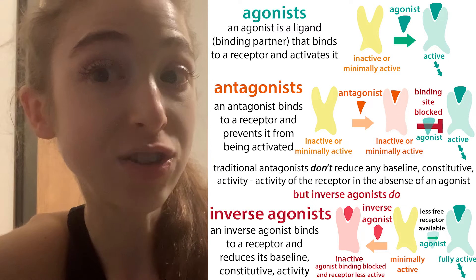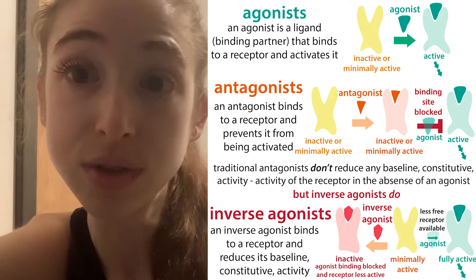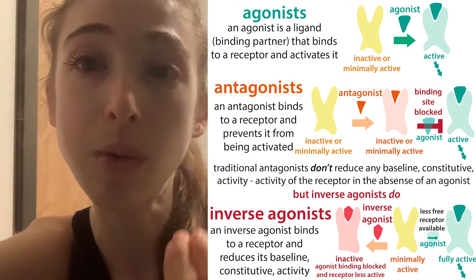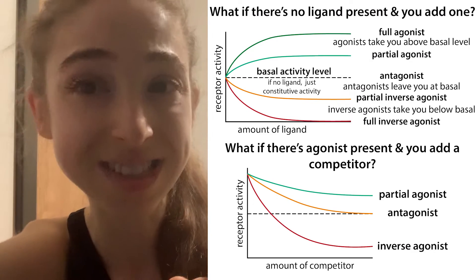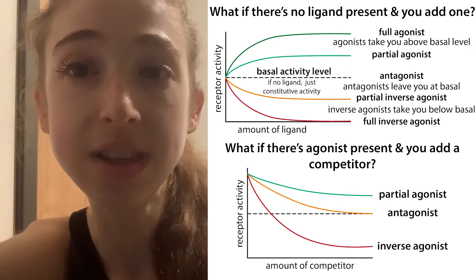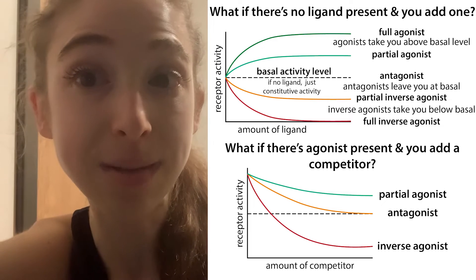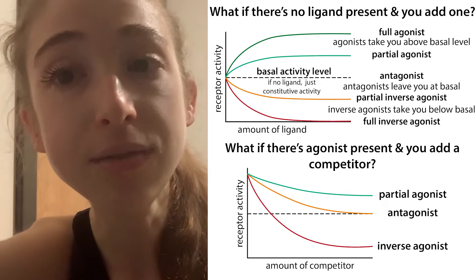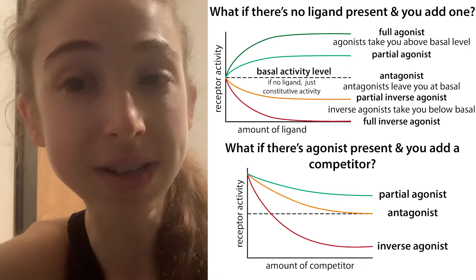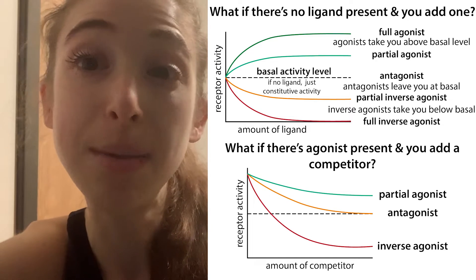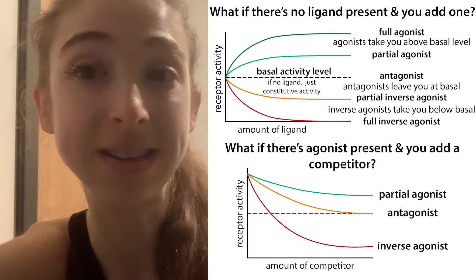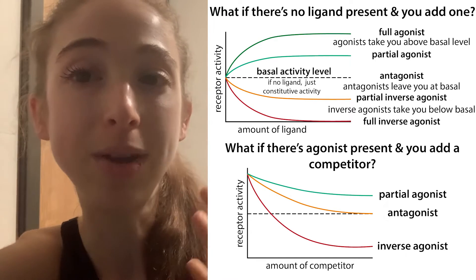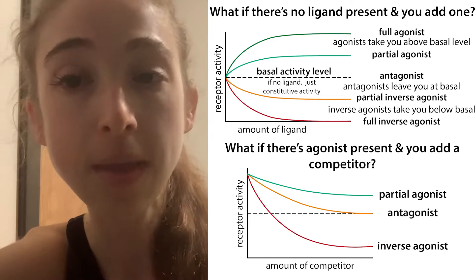An inverse agonist is actually able to reduce that baseline activity — what we call constitutive activity — the activity present in the absence of a signaling molecule. An inverse agonist can decrease that, taking you below what we call the basal activity level.